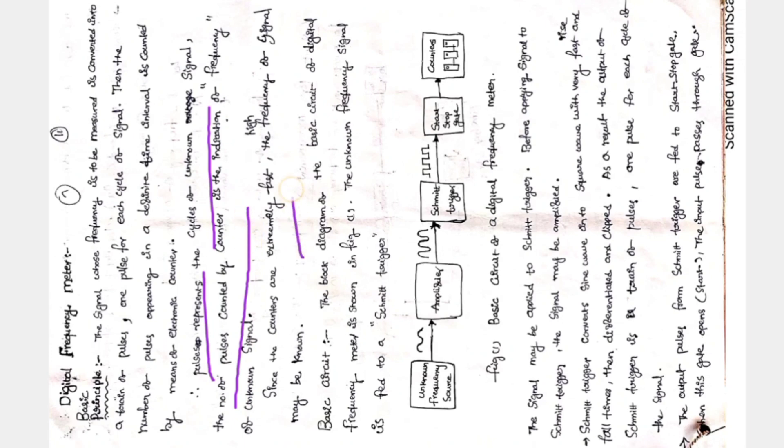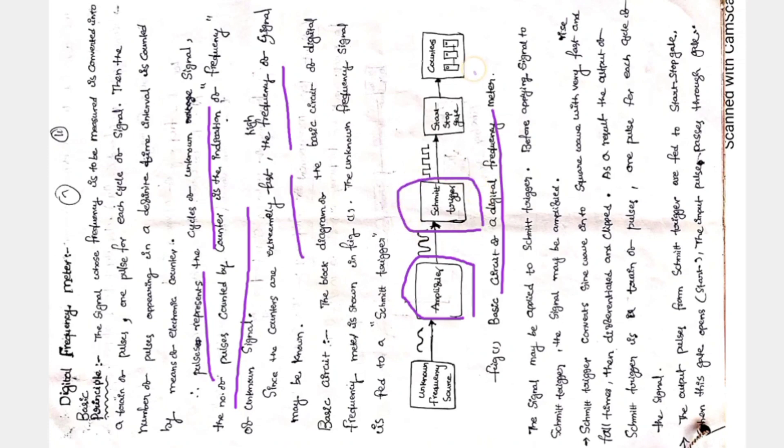Since the counters are extremely fast, high frequencies can be easily measured. The basic block diagram of the digital frequency meter: whatever unknown signal is given to the amplifier, it will amplify according to the meter range. After that, a Schmitt trigger is used, whose output is a square wave. This is connected to a start and stop gate, and then to the counter.